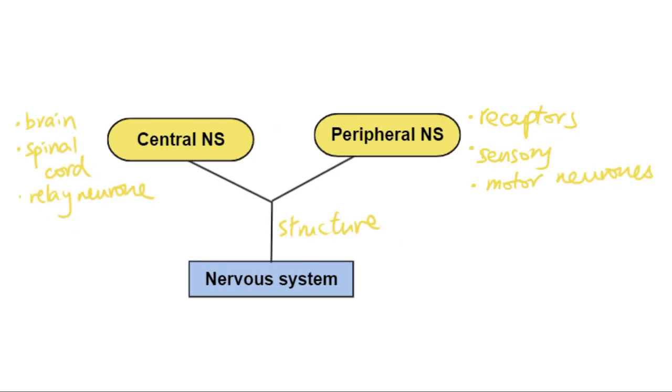So this is the way that we can classify the nervous system into two types based on their structure.